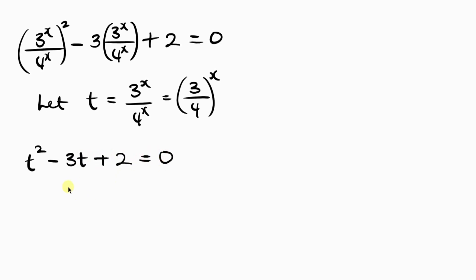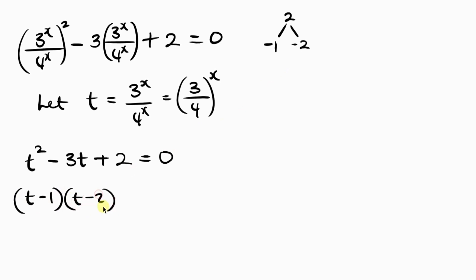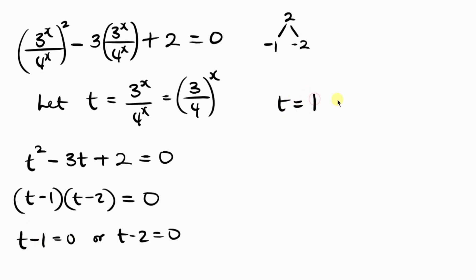This is a quadratic equation we can factorize. The product is positive 2 and the sum is negative 3, so the factors are negative 1 and negative 2. Therefore: t minus 1 times t minus 2 equals 0. Solving gives t equals 1 or t equals 2.